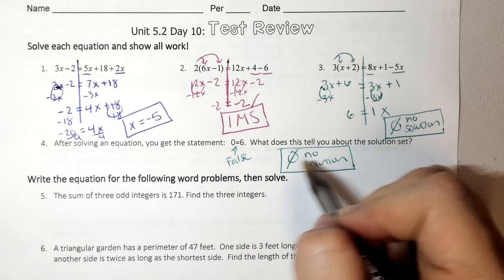Now if it said 4 equals 4, that would tell me IMS.